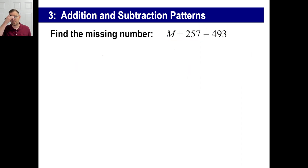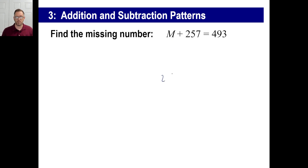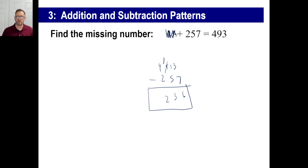Here's another one: find the missing number. M plus 257 equals 493. If you're adding things, the inverse operation will be subtraction — you're going to have to subtract 257 from 493 to get M. Borrow that and make it an 8: 13 minus 7 is 6, 8 minus 5, 4 minus 2. The answer is 236. Is that reasonable? Yes, there we go.